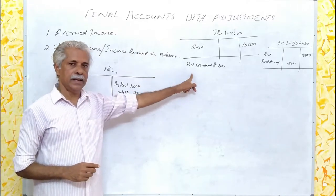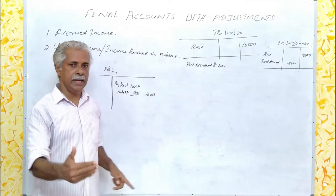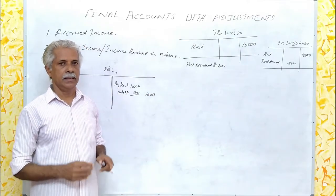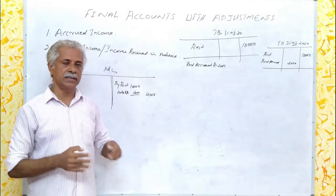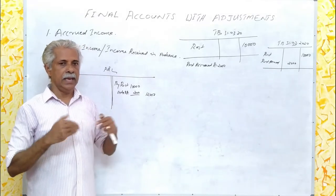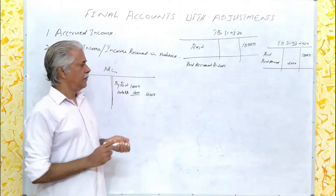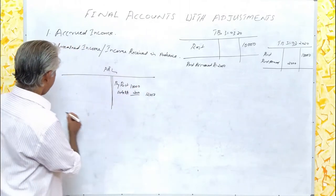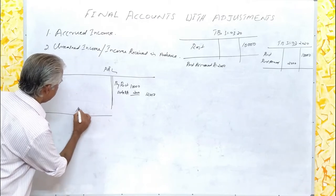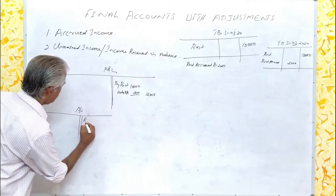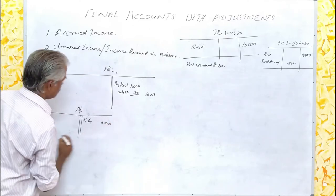Being an adjustment item, it will again be taken at another place. This is an amount which is due from others. Any amount due from others is an asset for us. Therefore, it should be shown as an asset in the balance sheet — rent accrued rupees 2,000.